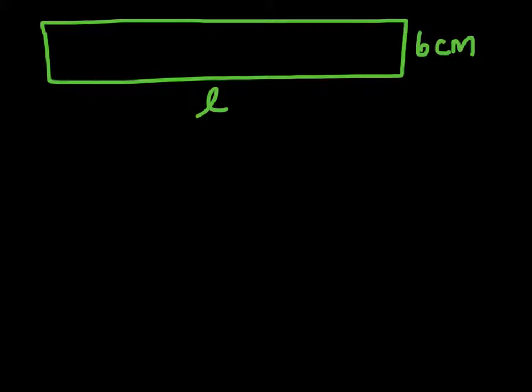Here's our first example. We'll solve using arithmetic first. The perimeter of the rectangle is 48 centimeters. Find its length, L.